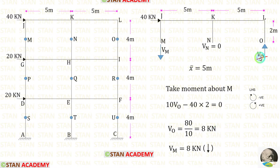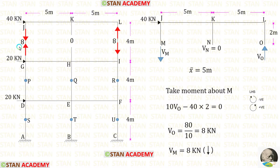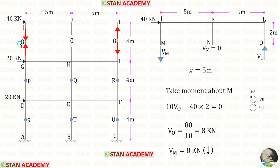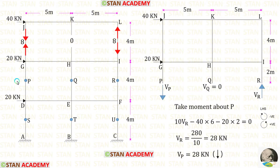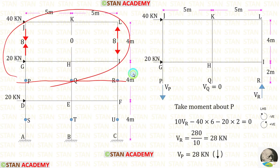We know that VO and VM will have the same value, but VM will be acting downwards. Let us apply the axial forces. We have calculated the axial forces just above the center of the columns; below the center they will be acting in the opposite direction. Now let us separate the frame into two parts from the center of the columns in the middle story and take the upper part.